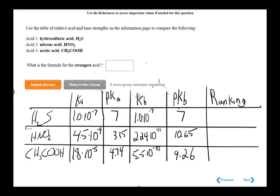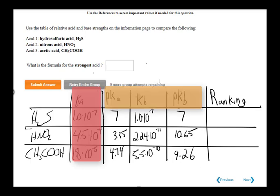I prepared a table including the Ka values for each acid. I also included pKa, Kb, and pKb values because I want you to see how the Ka values compare to these other three values relative to the acid ranking.